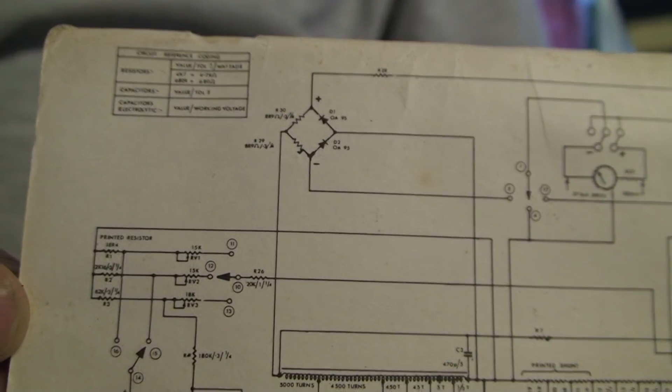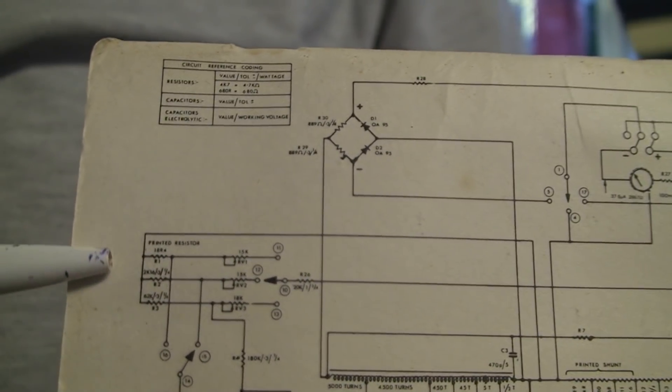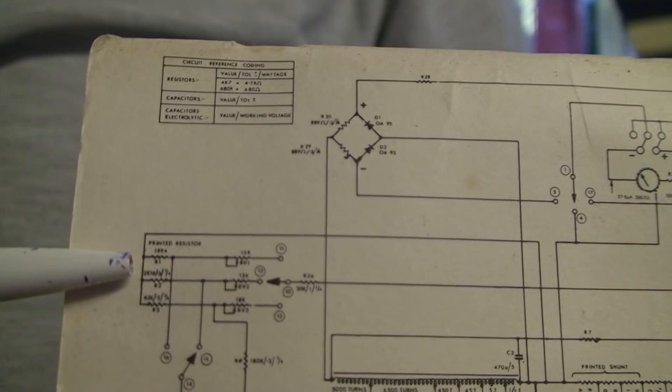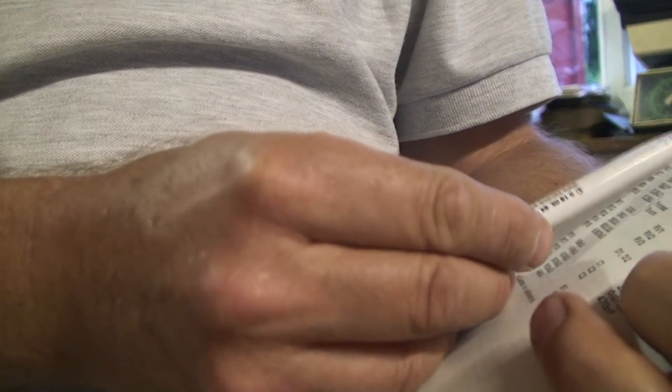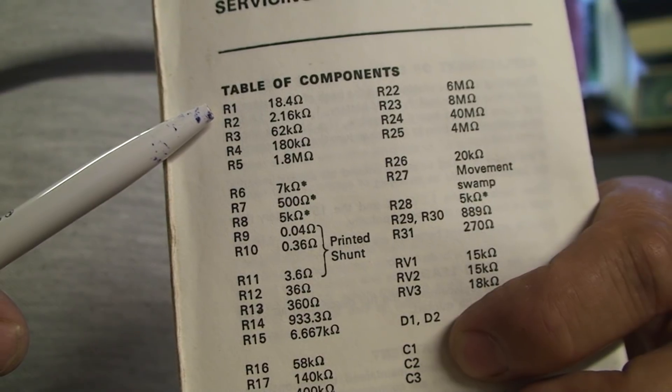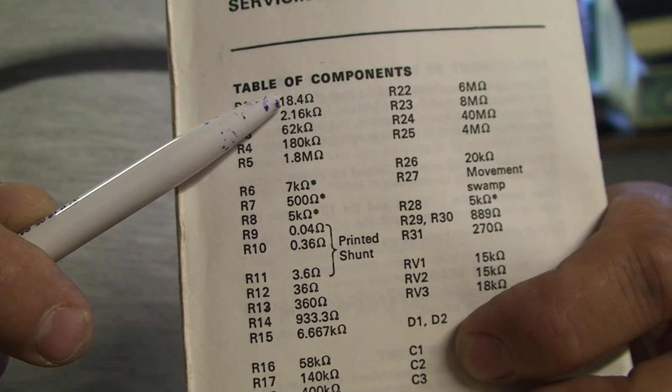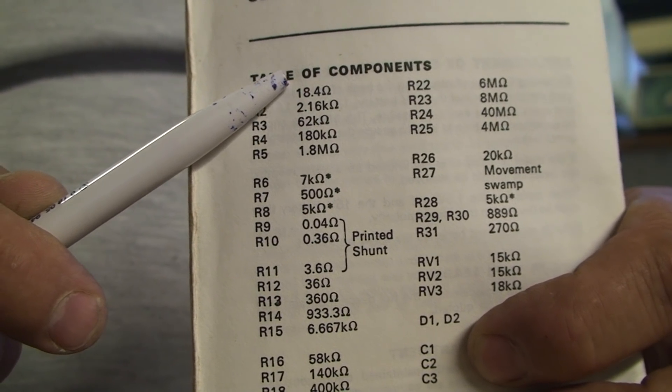If you look at this circuit diagram, this resistor here is the R1 resistor. And if you look on the back here, the R1 resistor here is 18.4 ohms. So what I'm going to do is I'm going to replace it.